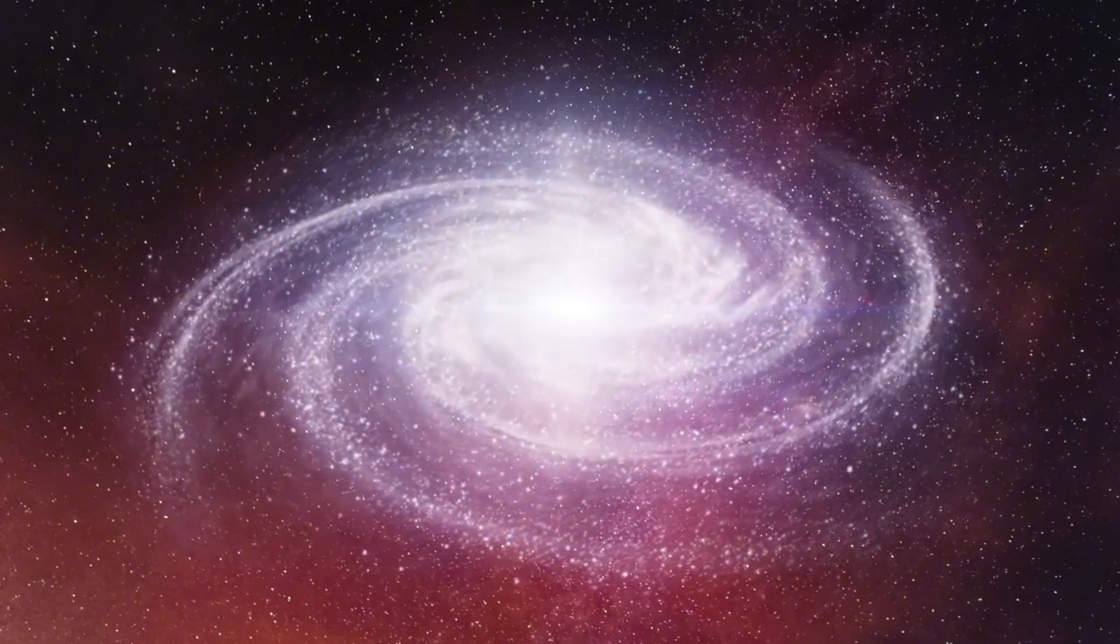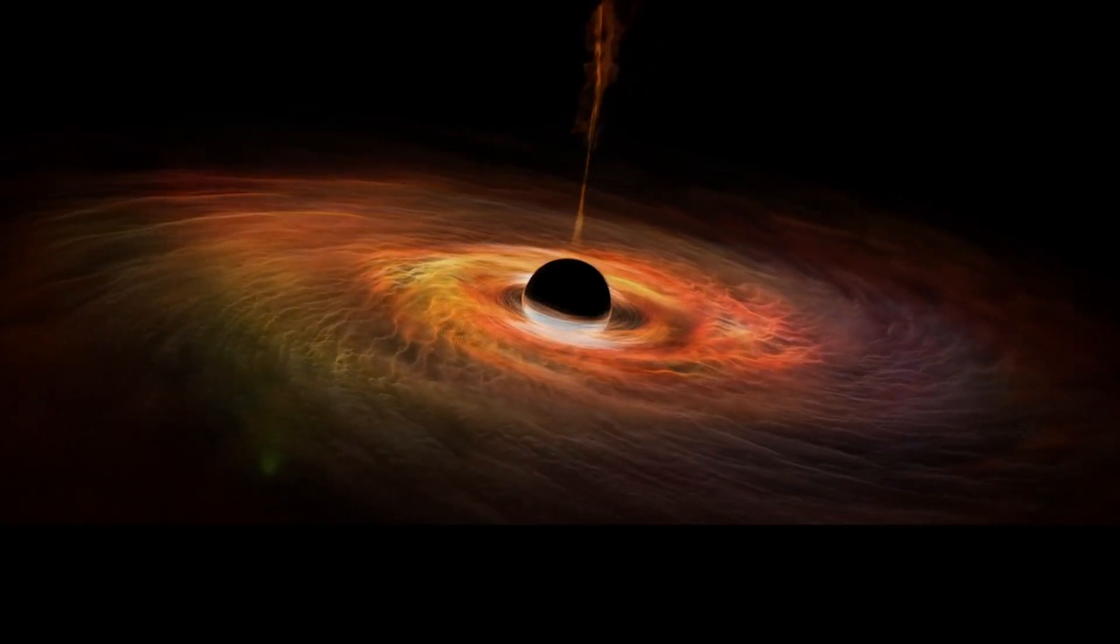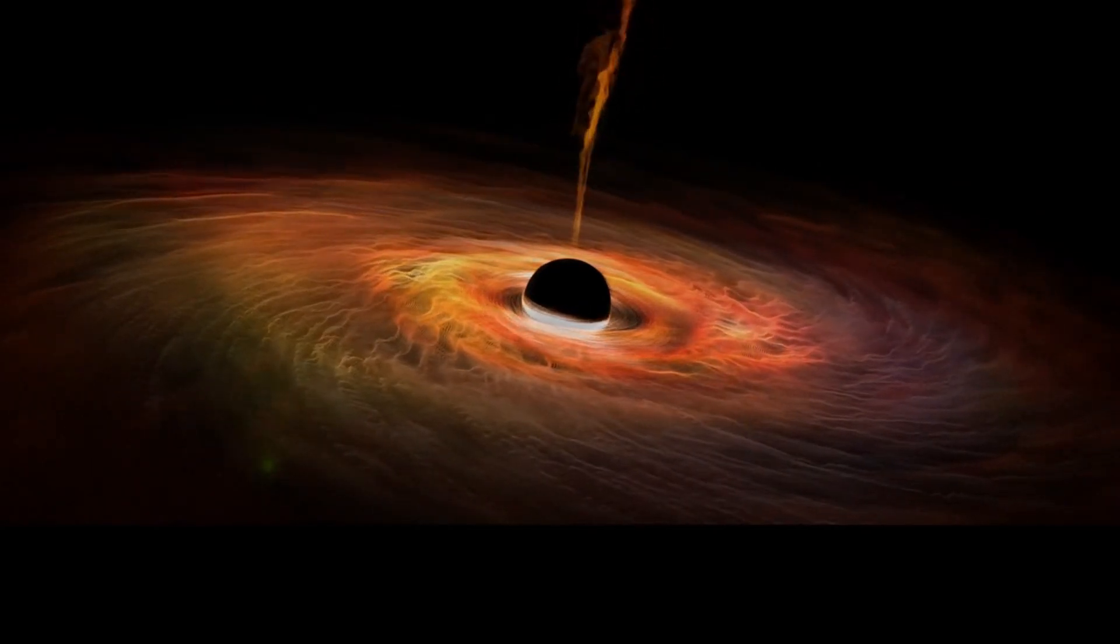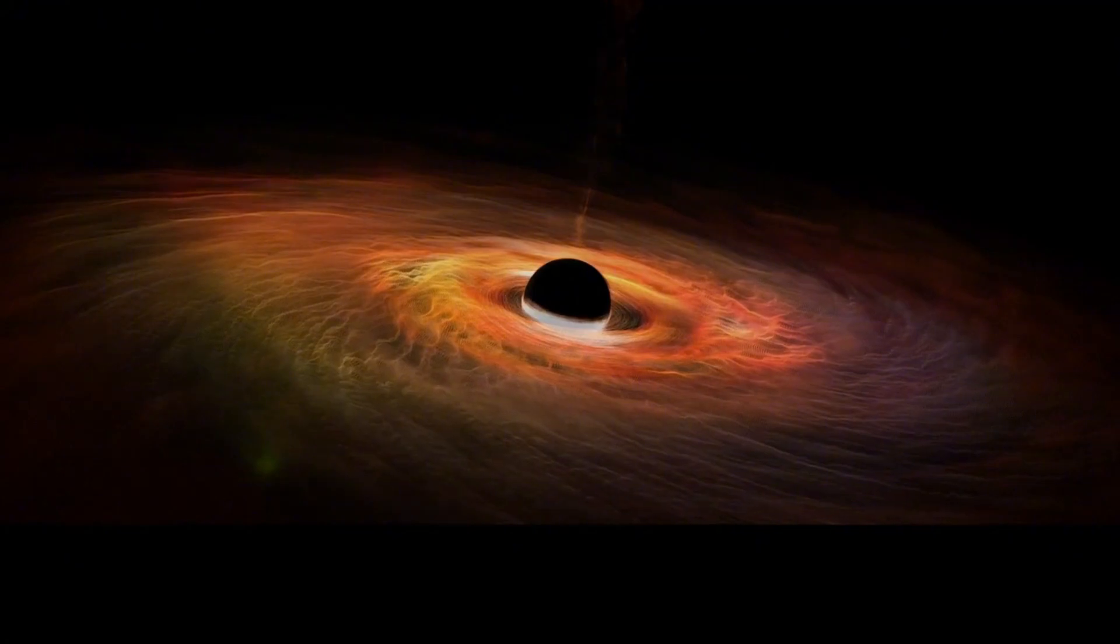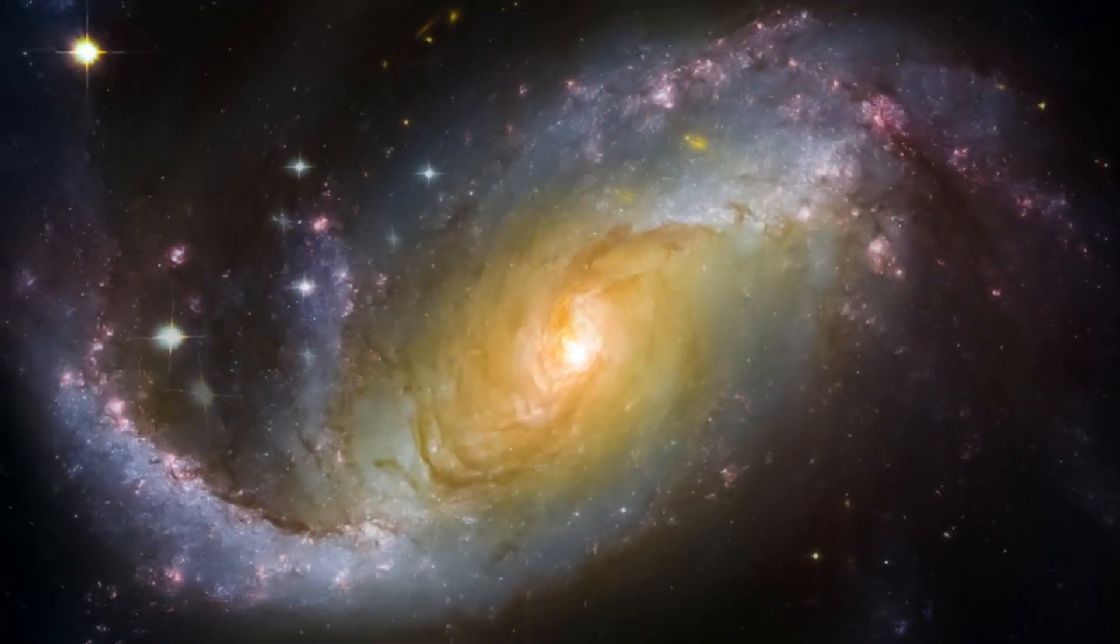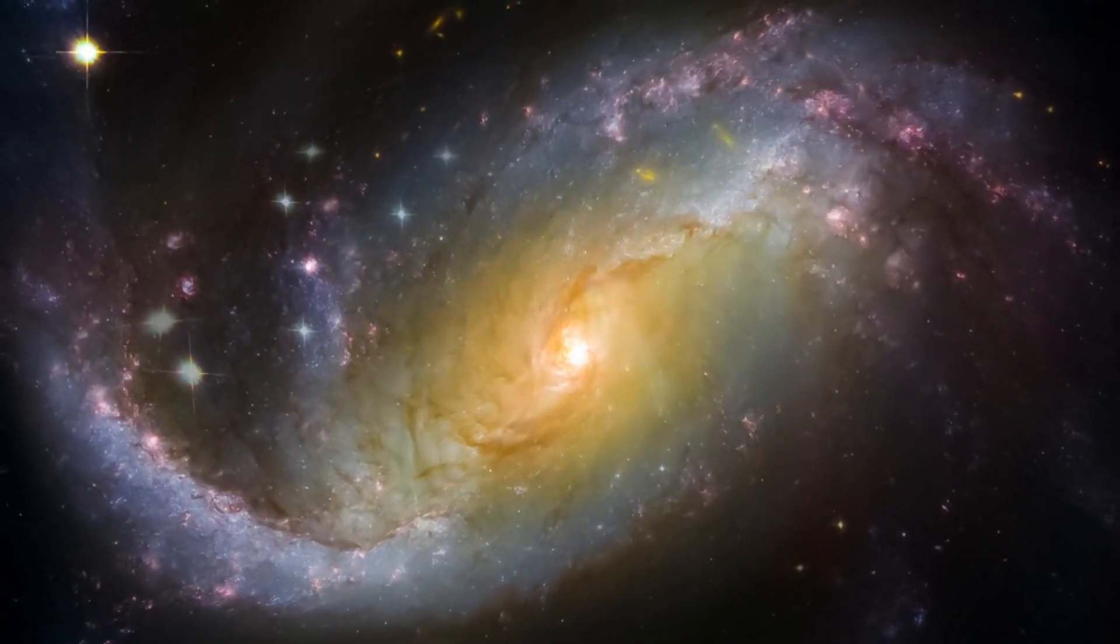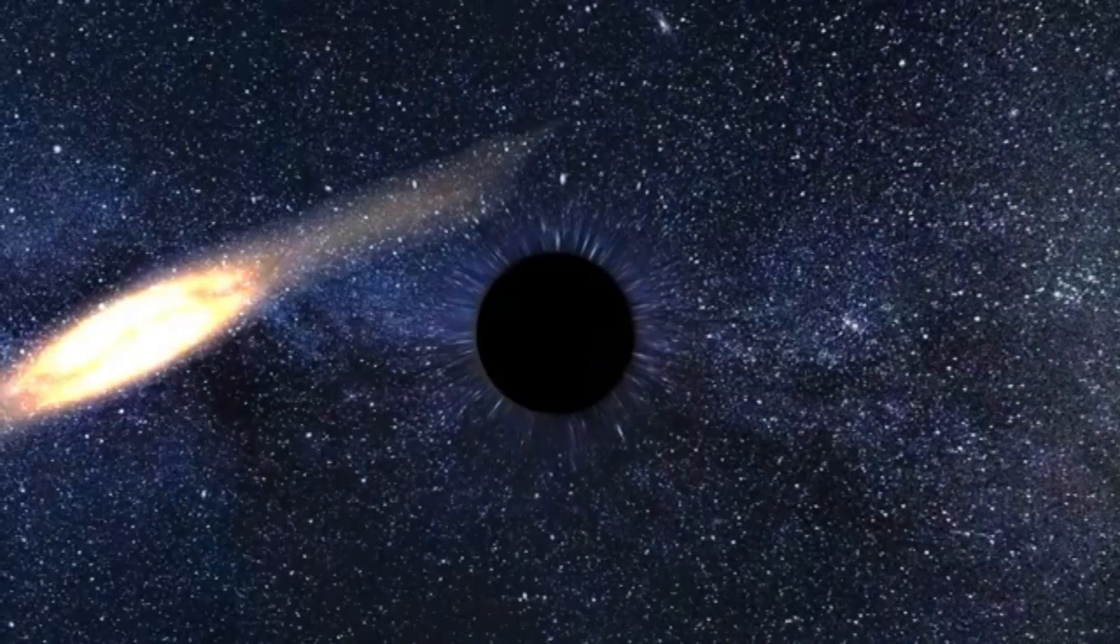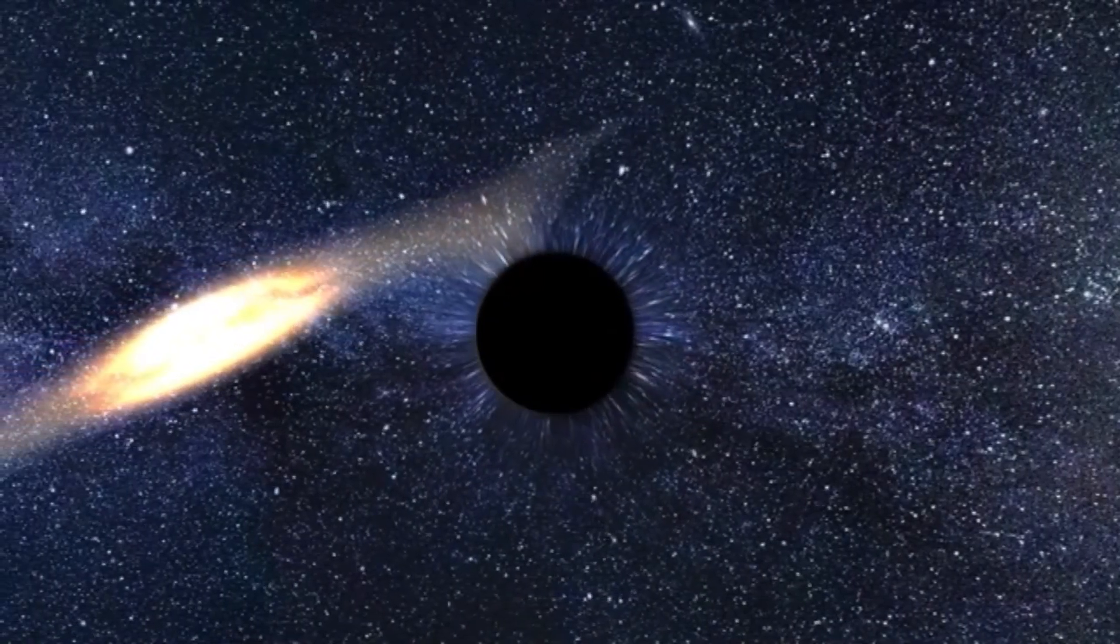The final layer is the singularity, where everything that falls into the black hole is crushed down to an infinitesimally small point. This is where the laws of physics, as we know them, break down entirely, and it's impossible to predict what might occur. What's even more fascinating and troubling is that no two black holes are exactly the same. While they all adhere to this three-layer structure, the way they operate can differ dramatically from one to another.